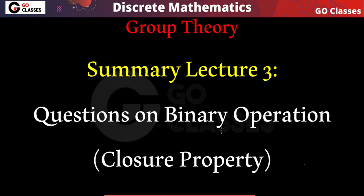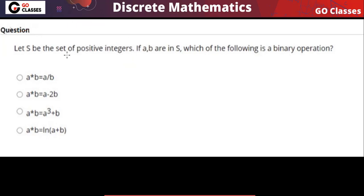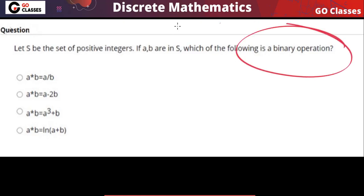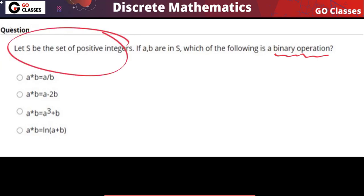Hi all, let's do some questions on binary operations or closure property. Let S be the set of positive integers — this is your base set. If a, b are in set S, which of the following is a binary operation? Remember, binary operation means closure: you apply it on two elements, and the result must also be in the set.